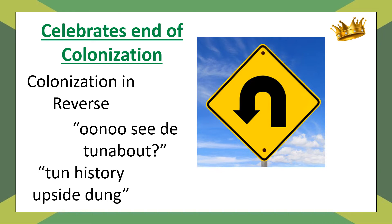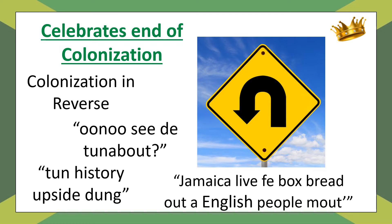There's a slight mocking tone when she talks about 'colonisation in reverse,' because what people from Jamaica are doing by freely travelling to England is in no way the same as when Britain took control of Jamaica. But she has fun with this idea, saying 'Jamaica live for box bread out of English people's mouths,' and gives the example of Jane on the dole getting £2 from the government — almost comparing those two things as equivalents, which of course they're not. This joking comparison makes the current migration seem positive and makes historical colonisation seem awful.